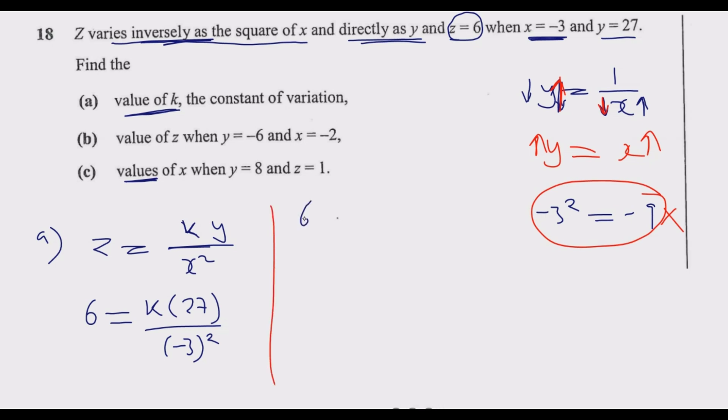At this point we can simplify: 6 equals 27k over negative 3 times negative 3, which is 9. I can divide 9 into 27, so 6 equals 3k.